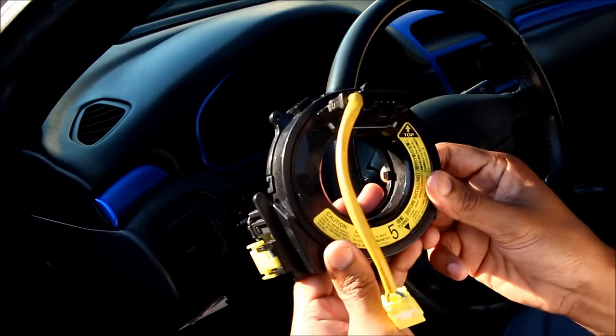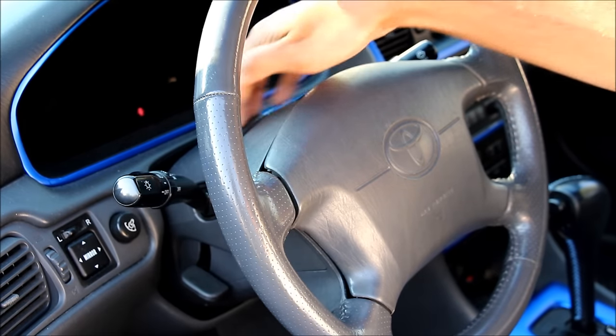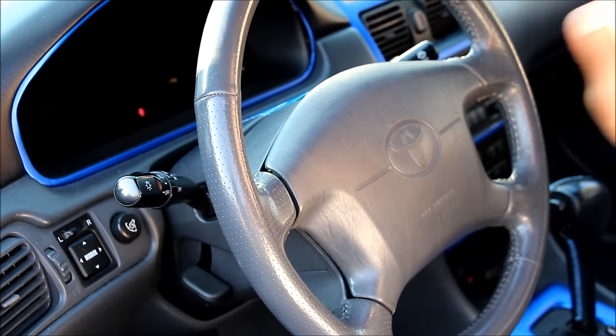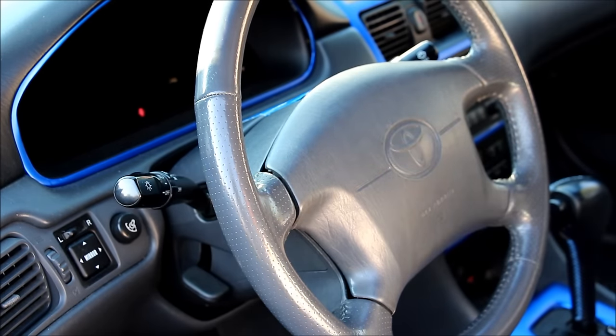We're going to be taking apart one of these to see what's inside. The clock spring is located behind the steering wheel. To access it we're going to first need to remove the airbag and then the steering wheel.